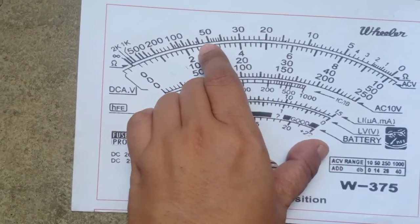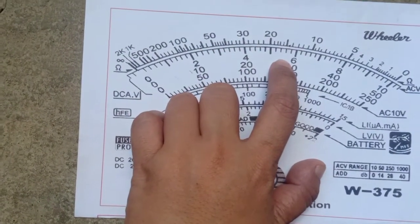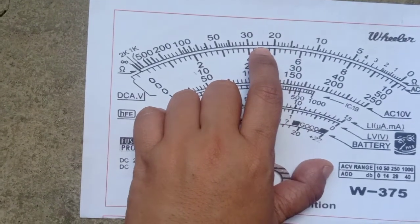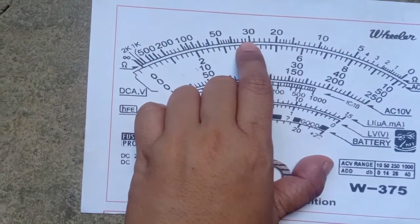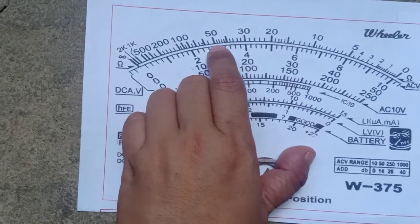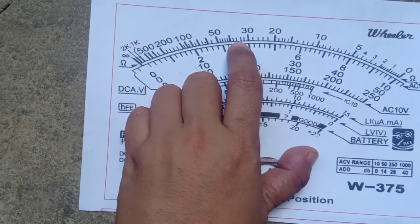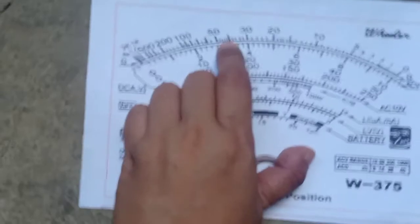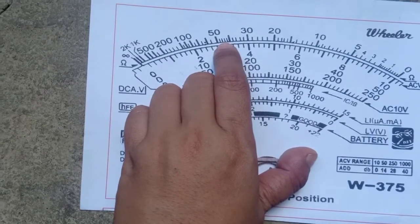20 to 50, ang bilang naman ng lines niyan ay 2. So, 20, 22, 24, 26, 28, 30, 32, 34, 36, 38, 40, 42, 44, 46, 48, 50.